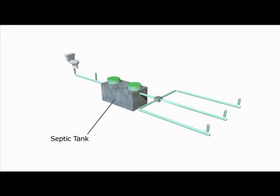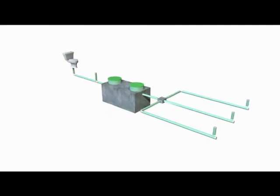Most septic systems consist of at least a septic tank and a drainage area. Every time you do the laundry, wash the dishes, flush the toilet, the waste water from your house runs into your septic tank.